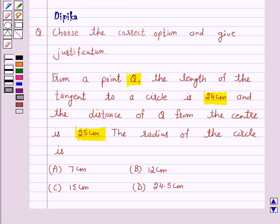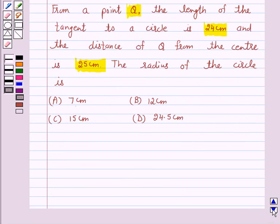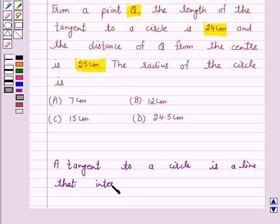Let us first understand the tangent to a circle. Now, a tangent to a circle is a line that intersects a circle at only one point.